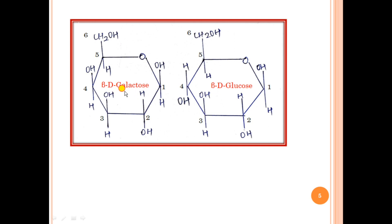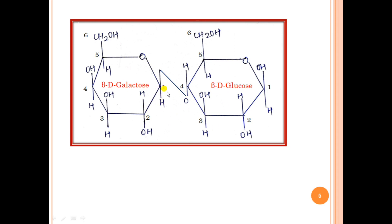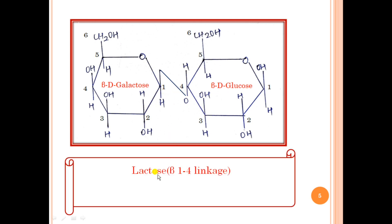Lactose is formed when there is a glycosidic bond between carbon atom number 1 of galactose and carbon atom 4 of glucose. The glycosidic bond is formed by a condensation reaction — condensation means removal of water. The OH from one and the H from the other are removed as water, and the bond so formed is called a glycosidic bond. Since carbon atoms 1 and 4 are involved, lactose has a beta-1,4 linkage.